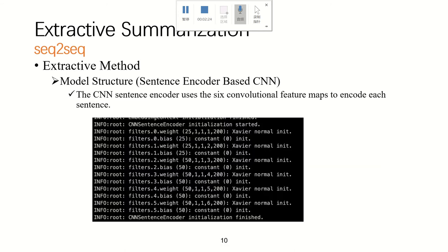We use six convolutional layers to do the extractive summarization. The structure is shown by the picture. So the filter size of the sixth layer is 50 and the feature map is 6. So the final embedding size is 50 times 6 equals 300.